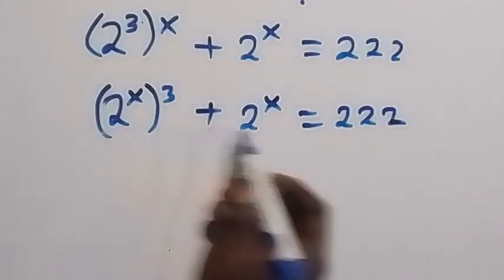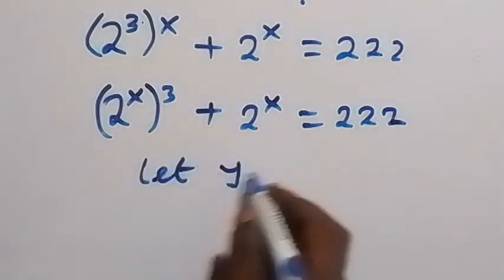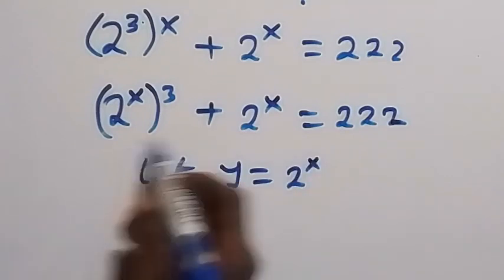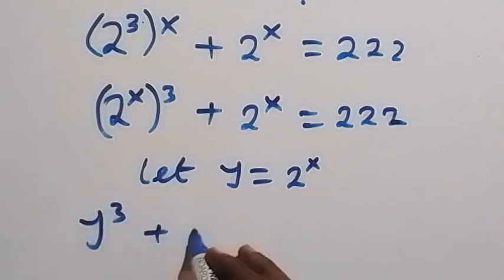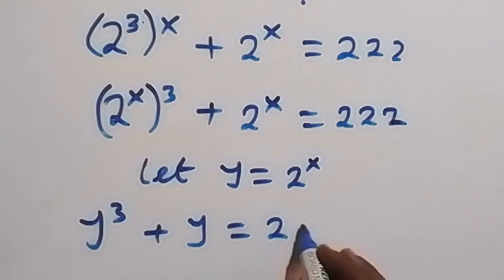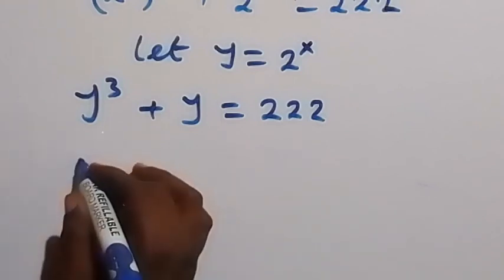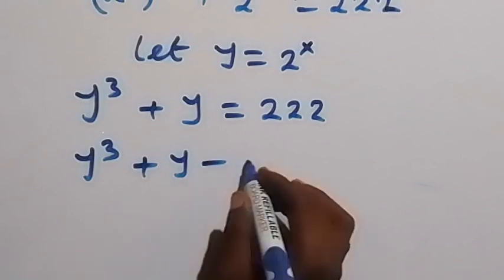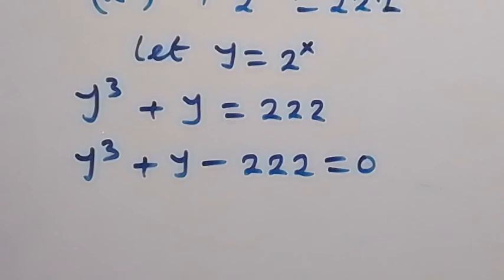Let y be equal to 2 raised to power x. This equation can then be written in terms of y, giving us y raised to power 3 plus y equals 222. In the next step, let's take 222 to this side, giving us y raised to power 3 plus y minus 222 equals zero.